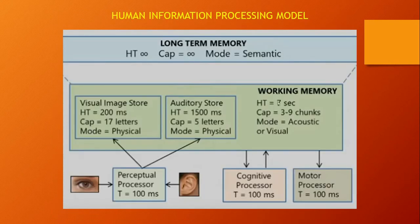This is the human information processing model. The perceptual processor represents the various sensory organs associated with it. It takes around 100 milliseconds before capturing an image, which is then stored in working memory whose half-life capacity is around 7 seconds. The capacity of working memory is around 3 to 9 chunks of information, and its mode of capturing information is acoustic or visual.